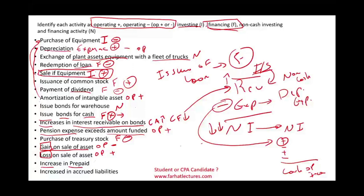Increase in prepaid: prepaid is a current asset. When your prepaid goes up, it's a negative cash flow — the assumption is you paid for that prepaid. If your prepaid is going up, it means you are buying more prepaid than expensing. The opposite is true: if your prepaid goes down, your cash flow goes up because you are expensing prepaid paid for in another period.